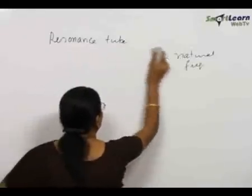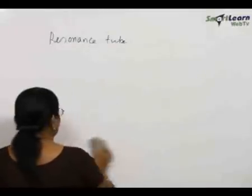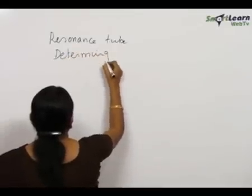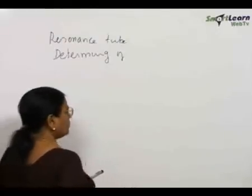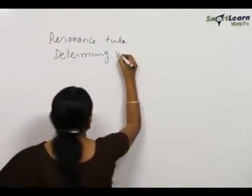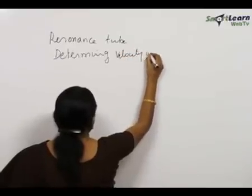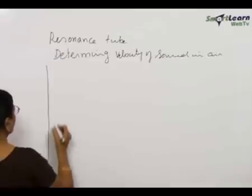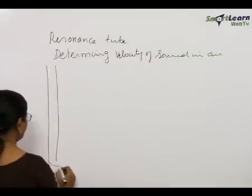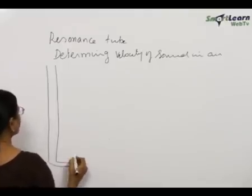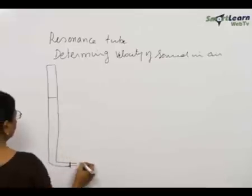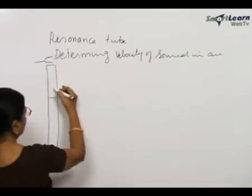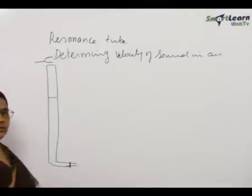That principle is now going to be used in the resonance column apparatus, which is used for determining the velocity of sound in air. In this setup, we have a very long tube about 1 meter long, connected at one end to a rubber tube with a pinch cock. It is filled with water which is slowly drained. A vibrating tuning fork is placed here — this is the forcing agency and the air column undergoes forced vibration under its influence.